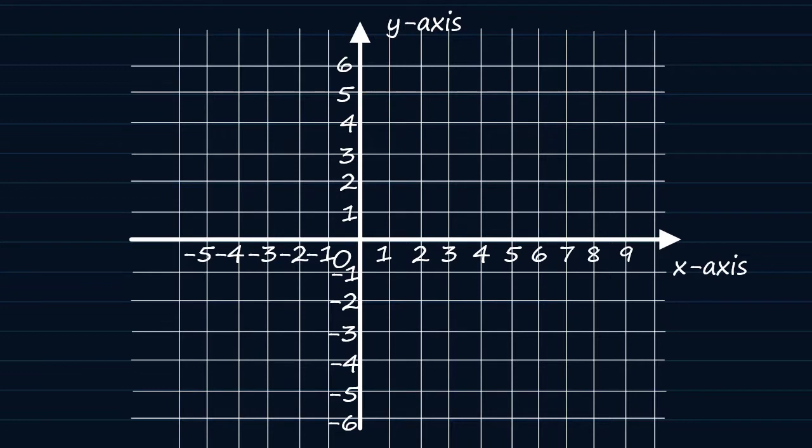The x-axis is positive to the right side of the origin and negative on the left side, while the y-axis is positive above the origin and negative below it.